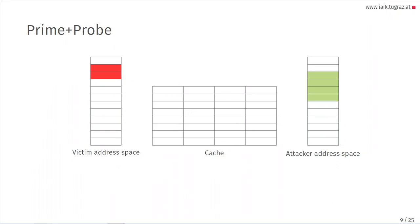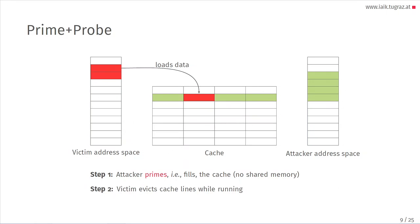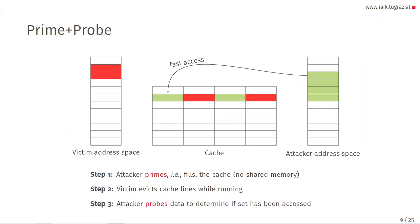In Prime and Probe, the attacker first primes — filling one cache set — without any shared memory. Then the victim loads some data, evicting the attacker's cache lines while running. What the attacker wants to know is whether the victim accessed a particular cache set. To do so, it probes its own data: the first cache line is a fast access because data is still in cache and hasn't been evicted by the victim. The second access is slow because data was evicted by the victim and must be retrieved from memory. So the attacker knows the victim accessed that cache set, and this is what we use for the covert channel.